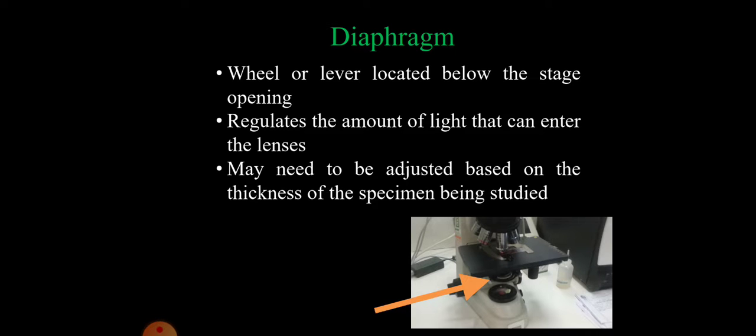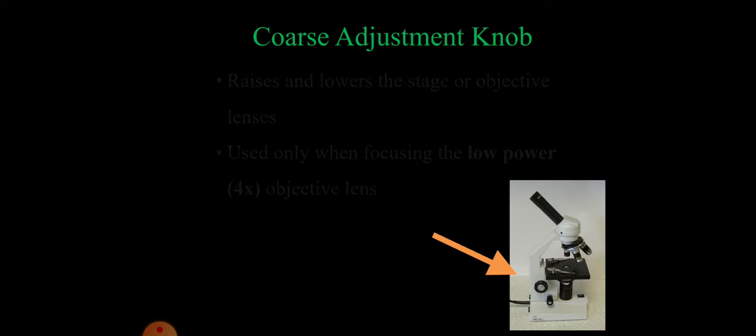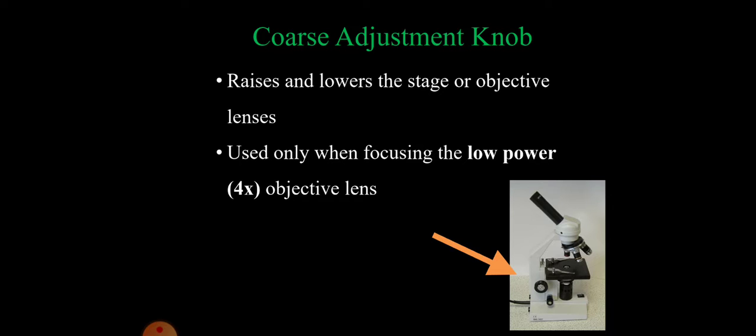Coarse adjustment knob raises and lowers the stage or objective lenses. It is used only when focusing the low power objective lens.